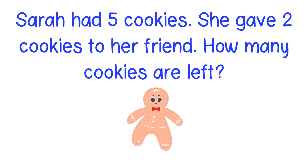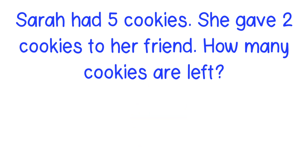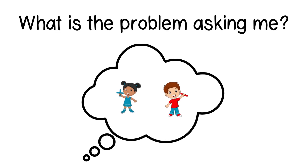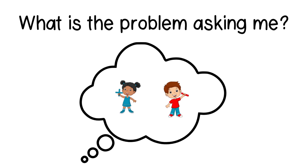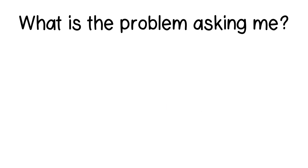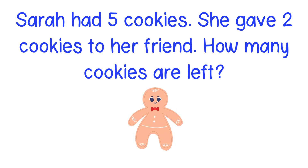Now it's your turn. Use your paper to draw a picture to show what's happening, or you can use your counters or even your fingers to model the problem. Sarah had five cookies. She gave two cookies to her friend. How many cookies are left? Are we putting numbers together and adding like with Put Together Patty? Or should we think about Takeaway Tim and find out how many are left over if we subtract the numbers? The problem said that Sarah started off with five cookies but she gave two away to her friends. This sounds like a job for Takeaway Tim, which means I need to subtract.